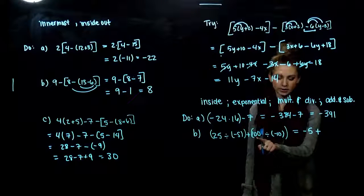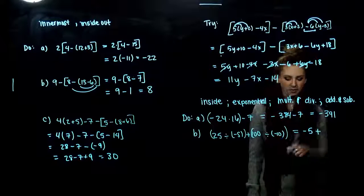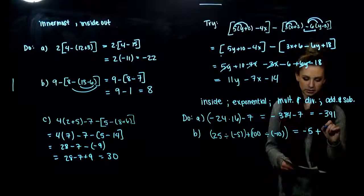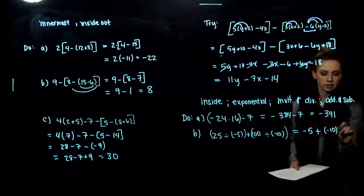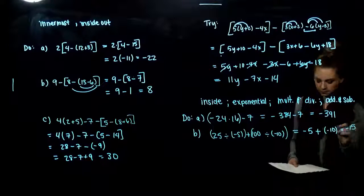100 divided by negative 10 gives us plus minus 10. So plus and minus is really like subtraction. What do we get out of there? Minus 15.